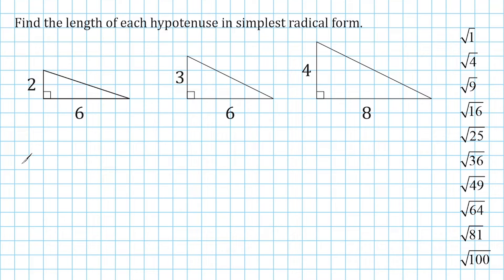Now to find the length of any hypotenuse of a right triangle, we can use the Pythagorean Theorem, which is a squared plus b squared equals c squared.